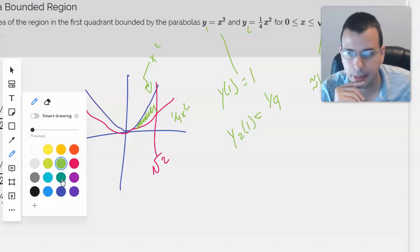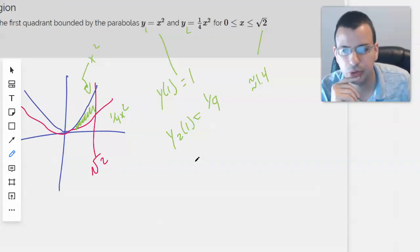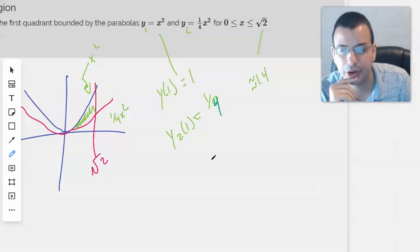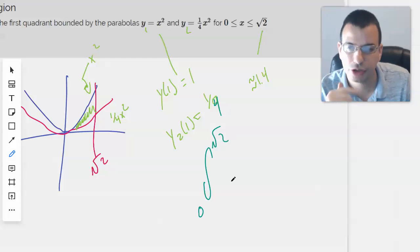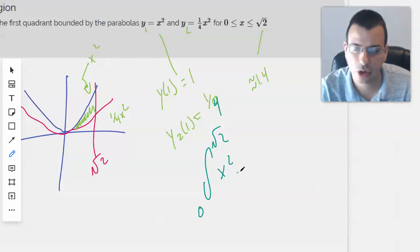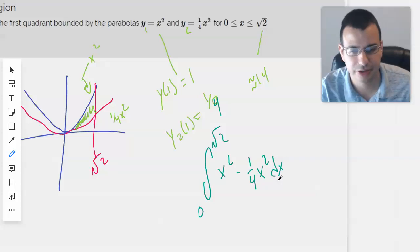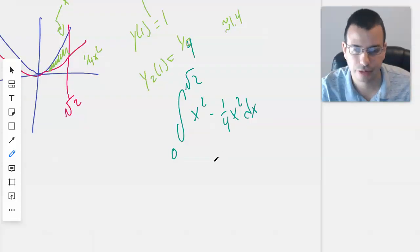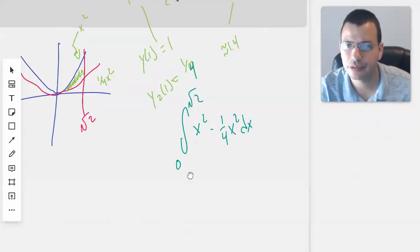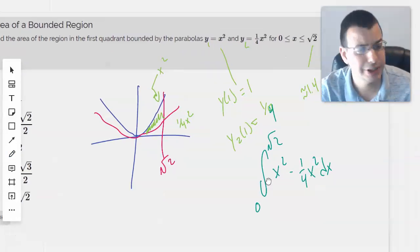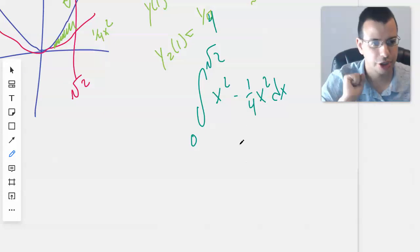So to do that, we will do integral from zero to square root of two of x squared minus one fourth x squared dx. Yeah, that seems reasonable. Yes indeed. Okay, so this is our game plan.